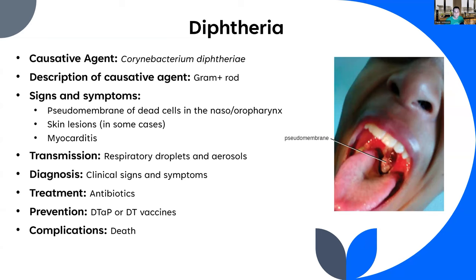Signs and symptoms: the thing that stands out in diphtheria is a pseudomembrane of dead cells — a white membrane coating either the nasopharynx or oropharynx. You can also develop skin lesions — actual holes in the skin — and myocarditis, inflammation and damage to the heart muscles. All of these are potentially fatal consequences. Diphtheria spreads fairly readily through respiratory droplets and aerosols.